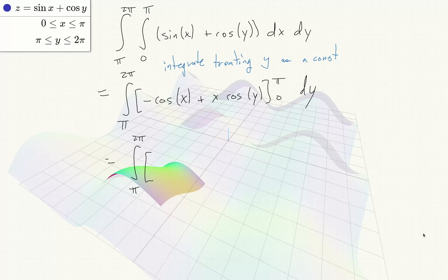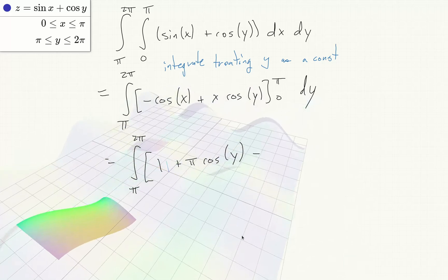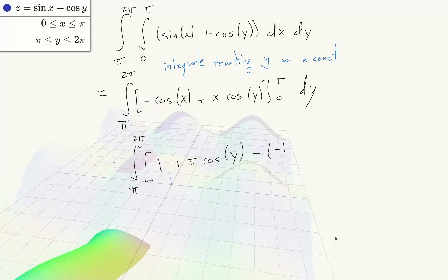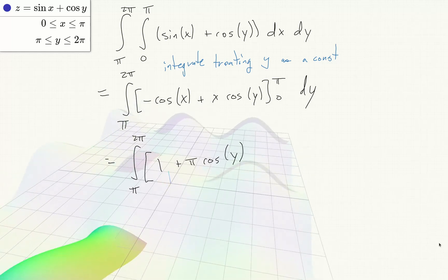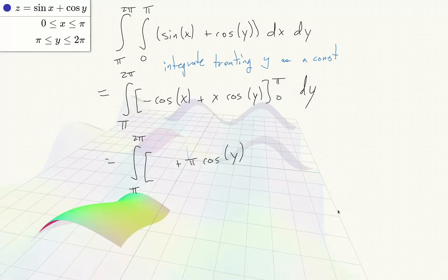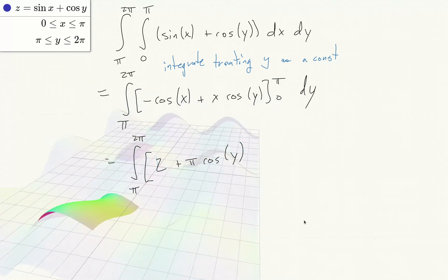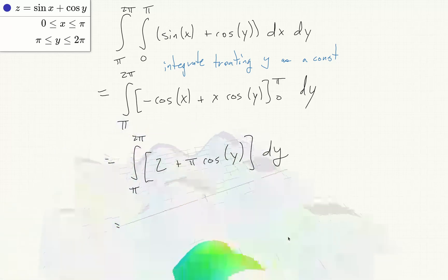So this will become the integral with respect to y from π to 2π. Negative cos π will be 1 plus π cos y minus 1, and then 0 cos y. So this will be 2 plus π cos y dy.